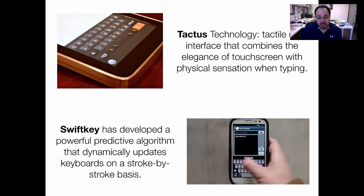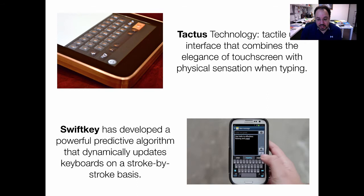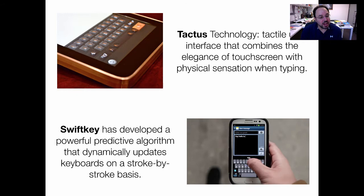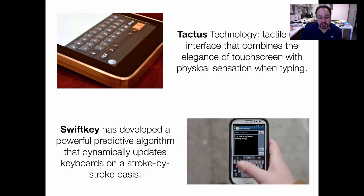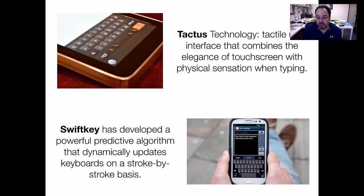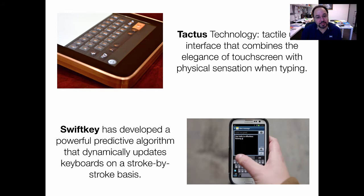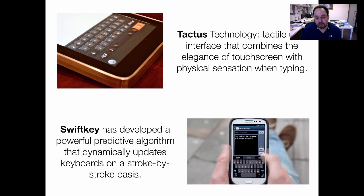We also have SwiftKey. SwiftKey — this is an earlier demo on a Samsung phone — developed a very powerful predictive algorithm that dynamically updates the keyboard on a stroke-by-stroke basis. It uses AI to predict what people are trying to type, enabling users to type quicker with fewer presses. A lot of the keyboards we see today use similar versions of that.